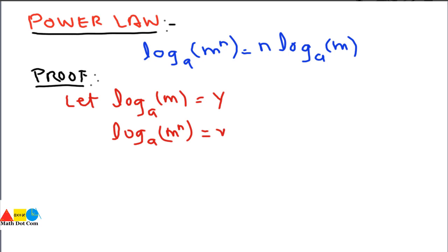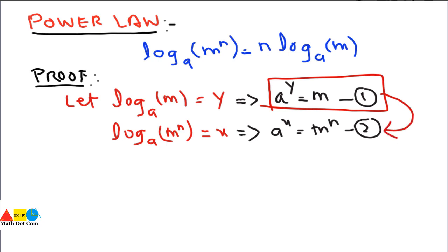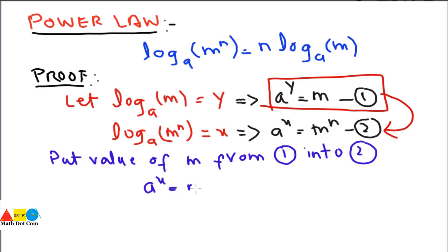Let log_a(m) = y and log_a(m^n) = x. Converting to exponential form: a^y = m (equation one) and a^x = m^n (equation two). We then substitute the value of m from equation one into equation two.